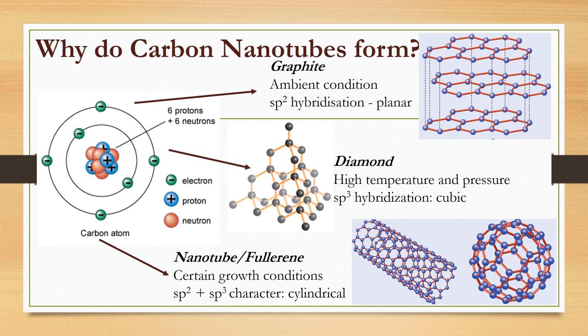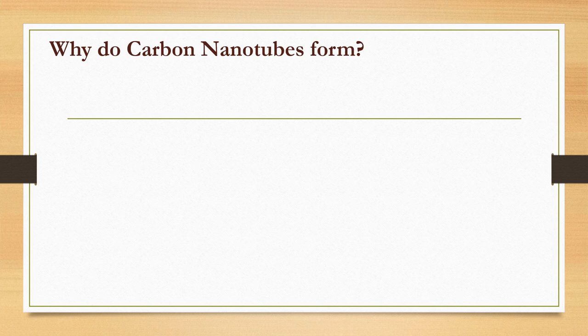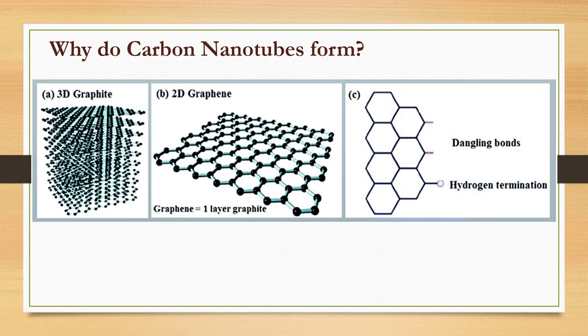The bonding in carbon nanotubes and fullerenes is sp2 with each atom joined to three neighbors as in graphite. CNTs are rolled up graphene sheets. This type of structural bonding, which is stronger than the sp3 bonds found in diamond, provides the molecules with their unique strength. The first reason for CNT formation is the hybridization of the carbon atoms.